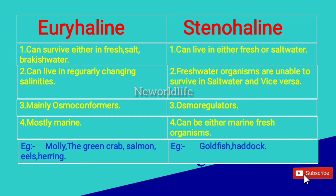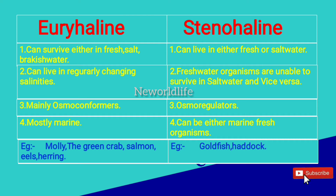The difference between Euryaline and Stenohaline: Euryaline can survive in either freshwater, saltwater, or brackish water. Stenohaline can live in either freshwater or saltwater. Euryaline can live in regularly changing salinities, while Stenohaline freshwater organisms are unable to survive in saltwater, or vice versa.